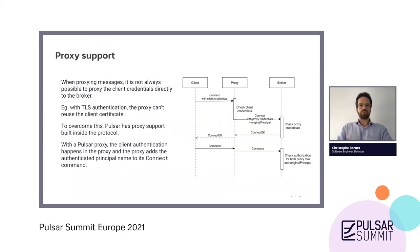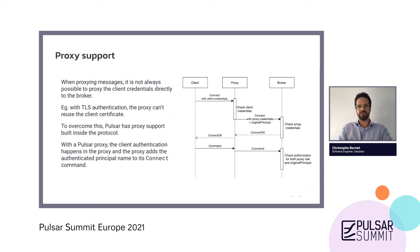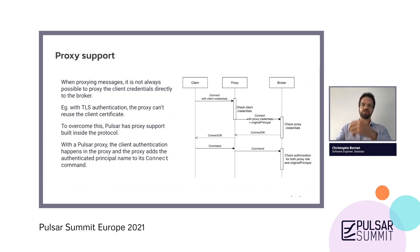About proxy support: there's built-in proxy support inside Pulsar. The problem when you put a proxy between a client and the broker is that it's not always possible to proxy the client credentials, especially if you're using TLS — you cannot proxy the client certificate. So instead, a client will authenticate with the proxy, and the proxy will then add the authenticated principal to its connect message to the broker. The broker can then authenticate both the proxy and the client, and also check the authorization for both.